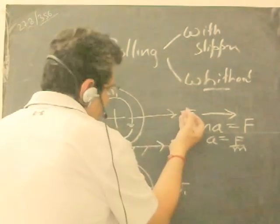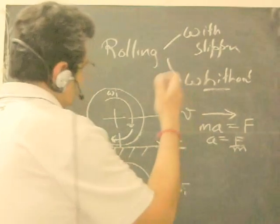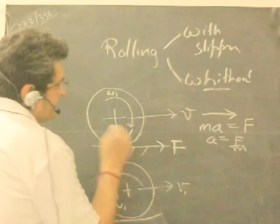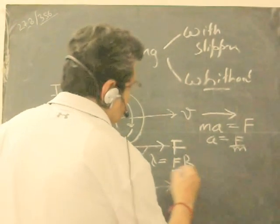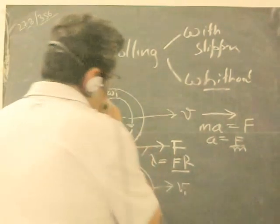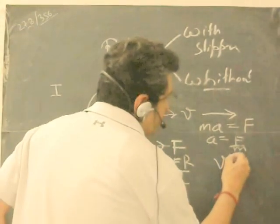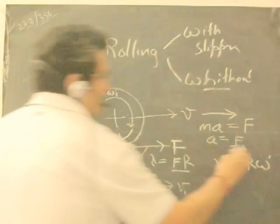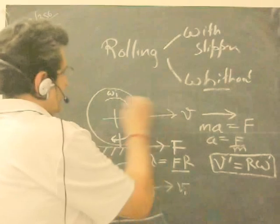From this we find the acceleration, which is F upon M, where F is the frictional force. When this is happening, the body is moving in this direction — it is rotating, rolling, and also slipping. The frictional force is acting against the rotational motion, so there is a torque due to the frictional force equal to F times R. This torque will retard the rotational motion, and a situation will come where the rotational motion becomes such that V' equals R·ω'. At that point, pure rolling starts.